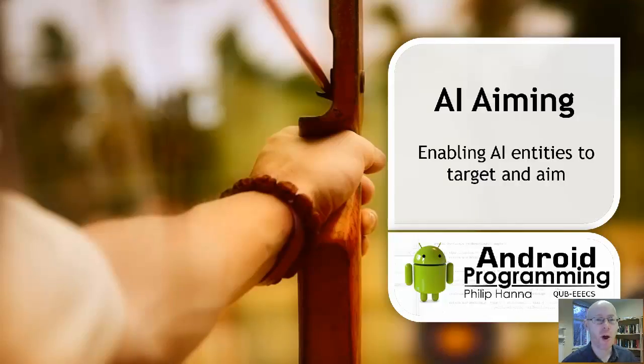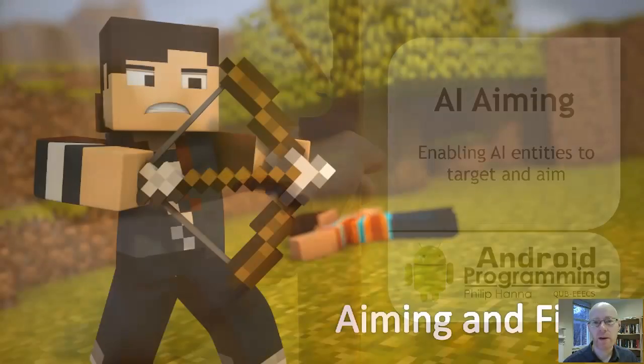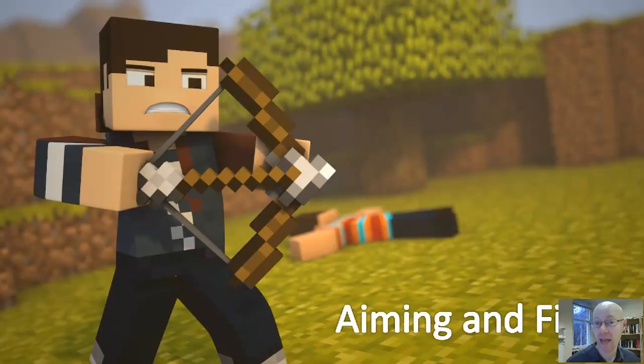In this short, reasonably specialized talk, we're going to have a look at one particular type of firing solution. We're thinking about a situation where we have an AI controlled character that is going to release an arrow from a bow or fire a cannonball. It's a projectile empowered with an initial amount of force and then subject to a gravitational force that pulls it down towards the ground.